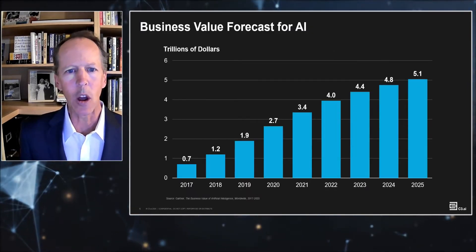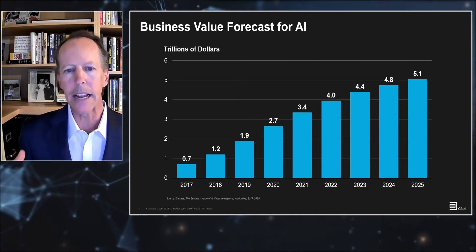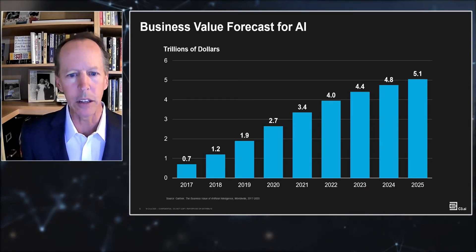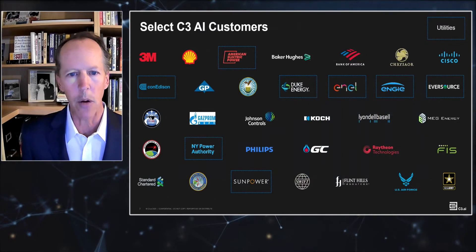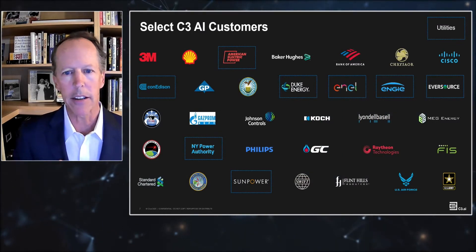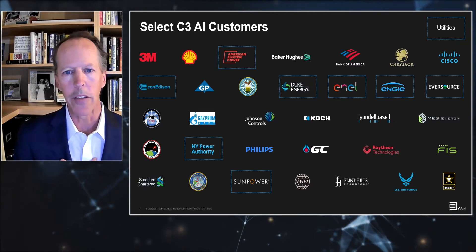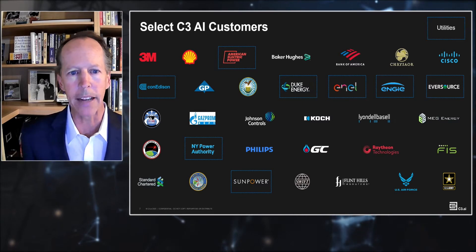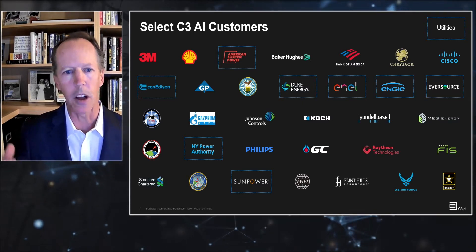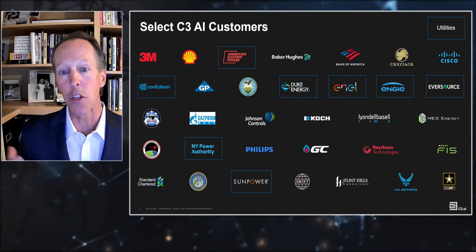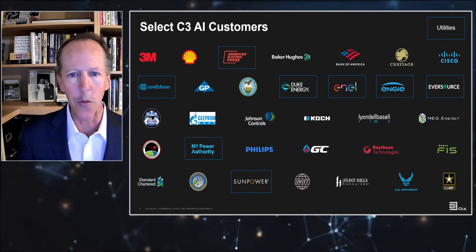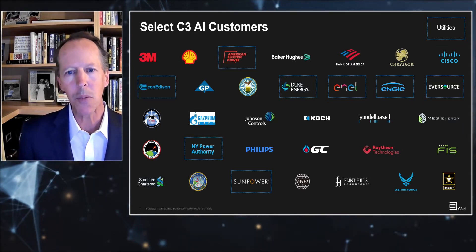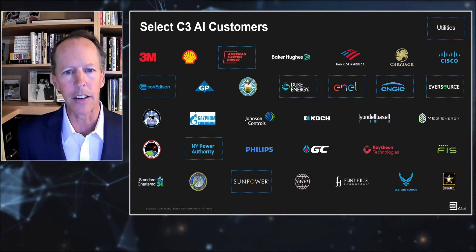The overall business value forecast to be realized from AI across all industries is in the trillions of dollars and growing. We are honored to serve iconic global brands across all industries, tending to focus on leaders in each category — 3M, Shell, Department of Defense, Bank of America, Phillips, and others.